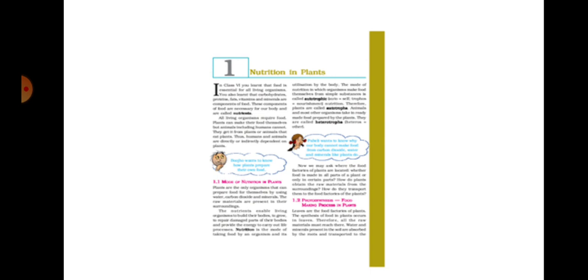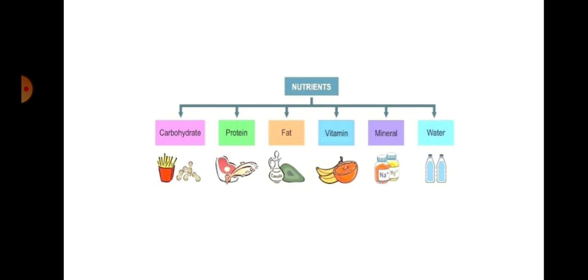So the first page explains what are nutrients, what is nutrition, and the two types of nutrition in plants: autotrophic and heterotrophic. Students, please read page number one. Thank you.